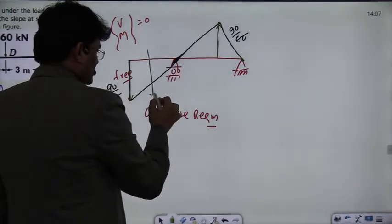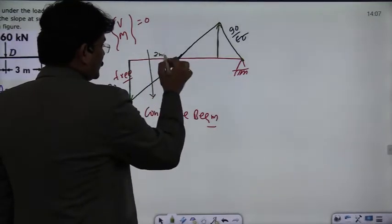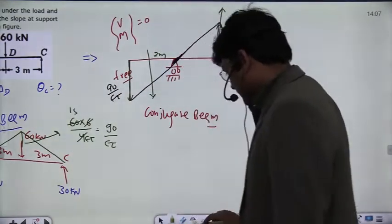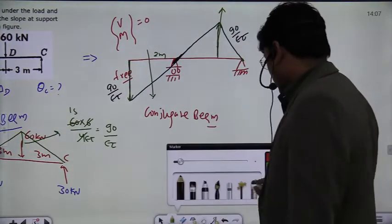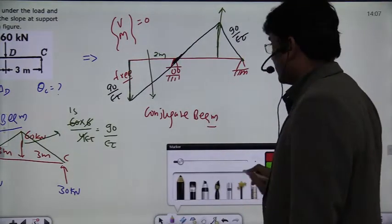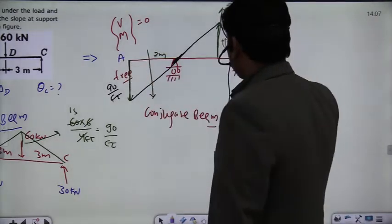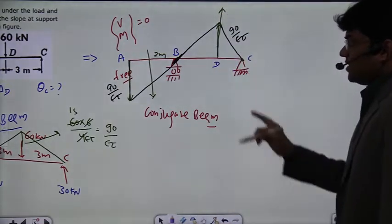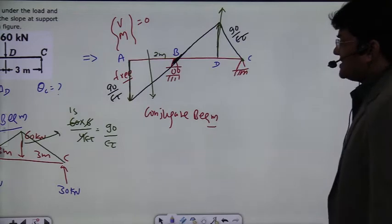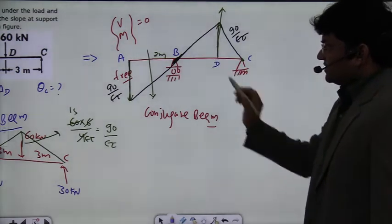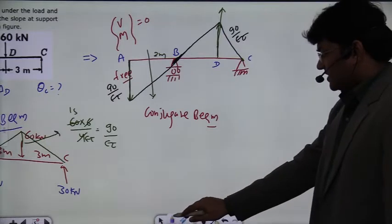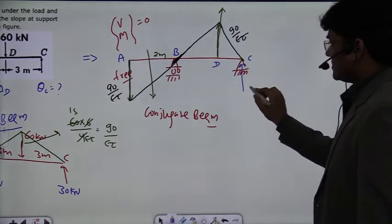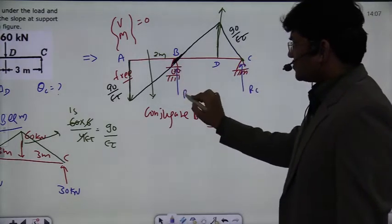The triangular loading is here. The resultant force will be at 2 meters distance, and the other resultant force will be at this point. First of all, you can mark these points. In the question, point A, point B, point C, and point D have been asked. You have to find theta C. So for theta C and theta B, you basically have to take reactions here. The reaction is RC here and the reaction is RB here.